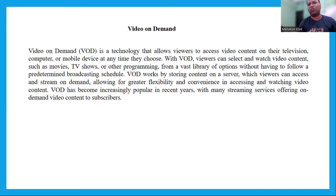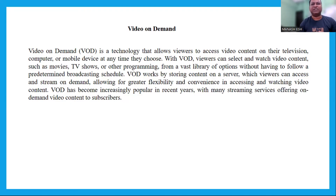Next is encoding. Once the content is created, it needs to be encoded into a digital format that can be streamed over the internet. This involves compressing the video and audio files into a format that can be delivered efficiently over the internet. Different encoding standards are used for different types of devices and network speeds.